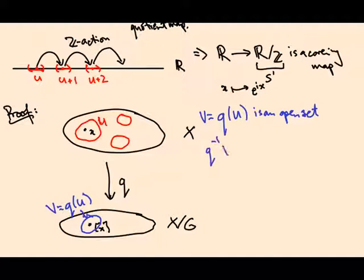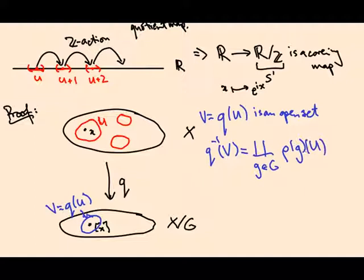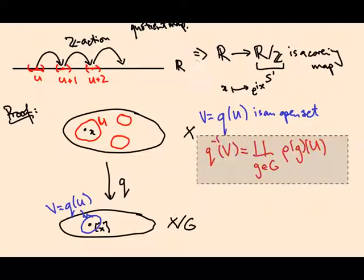Now q⁻¹(V) — you might think that's just U, but it's not. It's U together with all of its translates under the group action, and those are disjoint from one another. So this is the disjoint union over elements g in G of rho_g(U). That's this set upstairs: it contains U but also contains other translated copies.